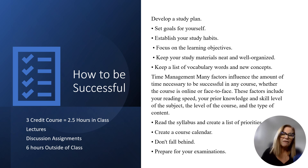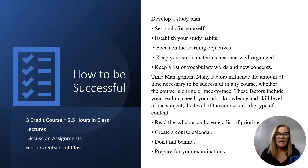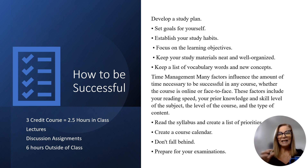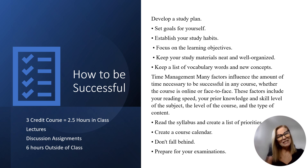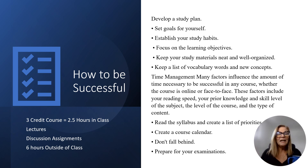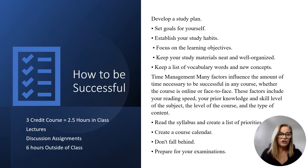They also say that for every credit in college, you should spend about two hours outside the course preparing, which would be about six hours outside of class. So in a nutshell, you're spending eight and a half hours a week. If you're not spending at least close to that, you're not doing this course correctly. The two and a half hours you'd normally be in class should be spent on your lectures and really honing in on those discussion assignments.